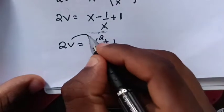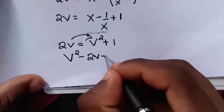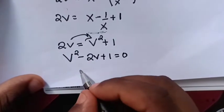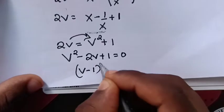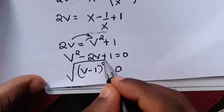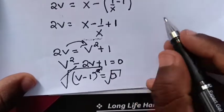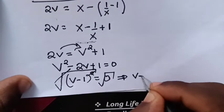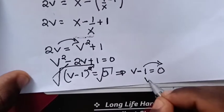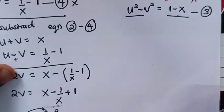This looks like a quadratic equation: v squared minus 2v plus 1 equals 0. This is the same as bracket v minus 1 squared equals 0. We find the square root of both sides, and the square root and square cancel, giving v minus 1 equals 0. Therefore v equals 1.